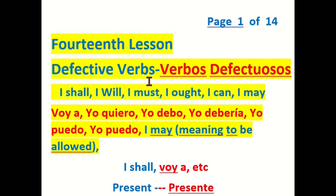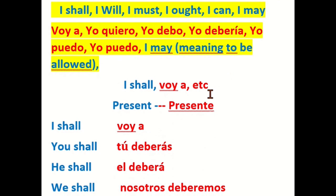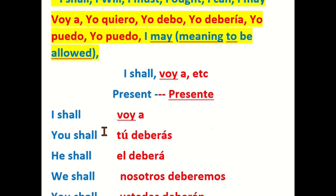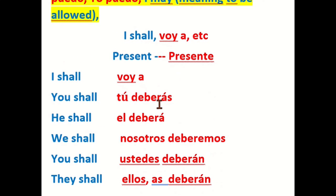So these are defective verbs, verbos defectuosos. In the present: I shall — voy a; you shall — tú deberás; he shall — él deberá; we shall — nosotros deberemos; you shall — ustedes deberán; they shall — ellos o ellas deberán.